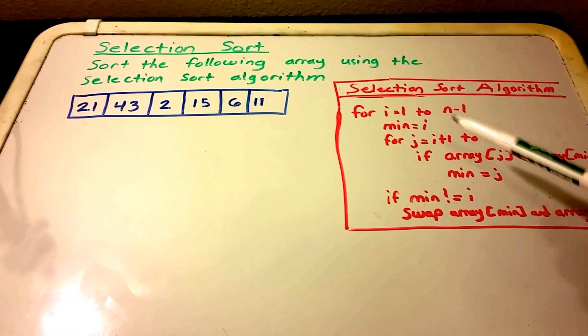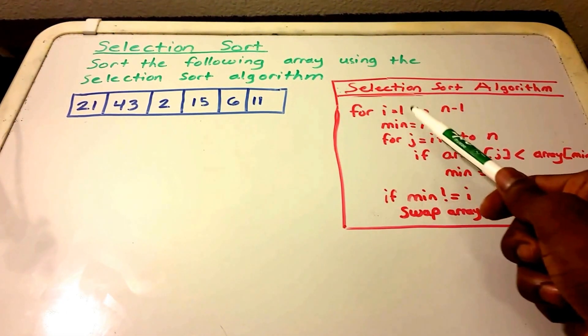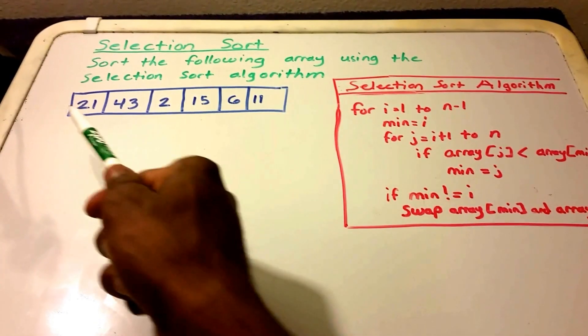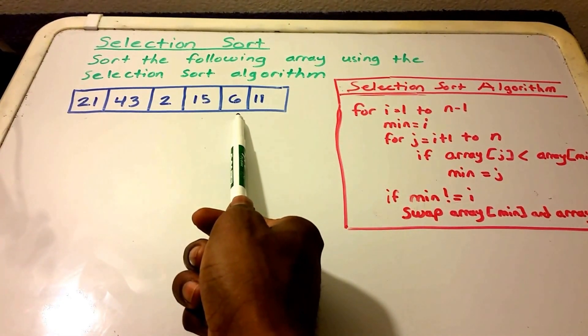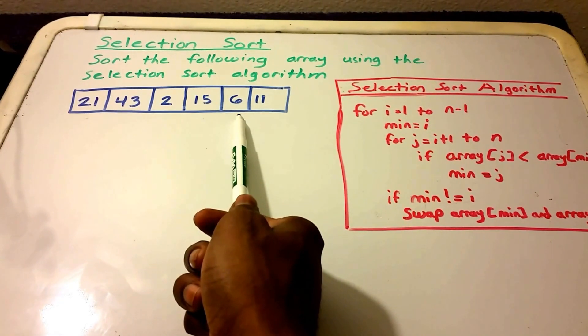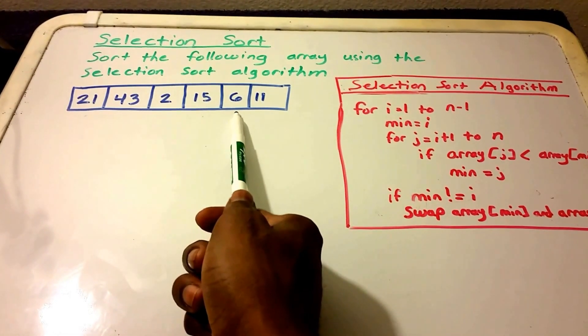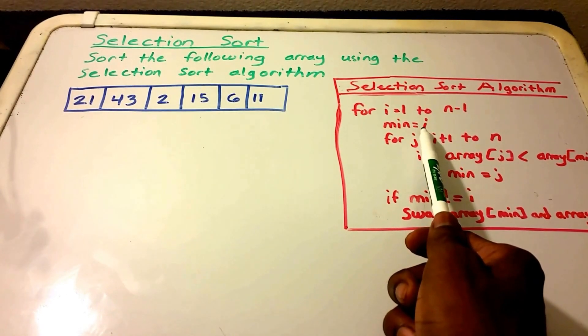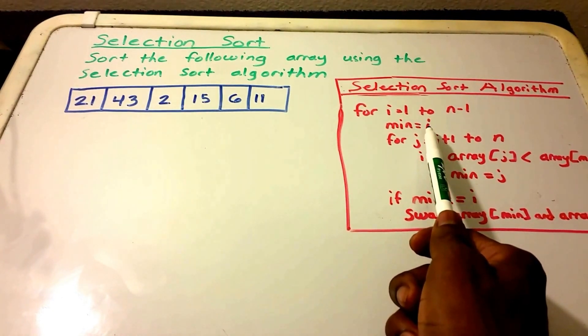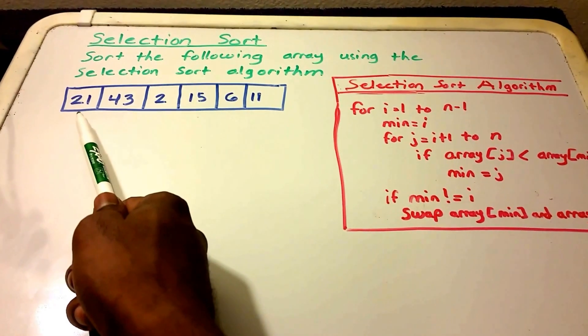So the selection sort algorithm works like this. It says for i equals 1 to n minus 1. So it goes from the start of the array to 1 minus the length of the array. So that's our value n. And then it assigns minimum to the first element. So it says the first element is the minimum element. So in this case, 21 would be the minimum element.